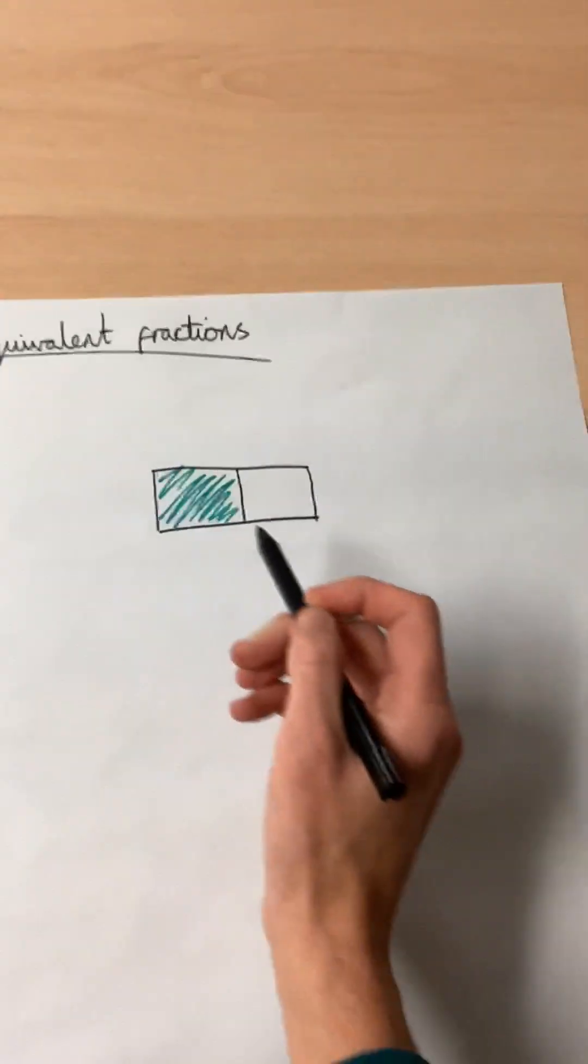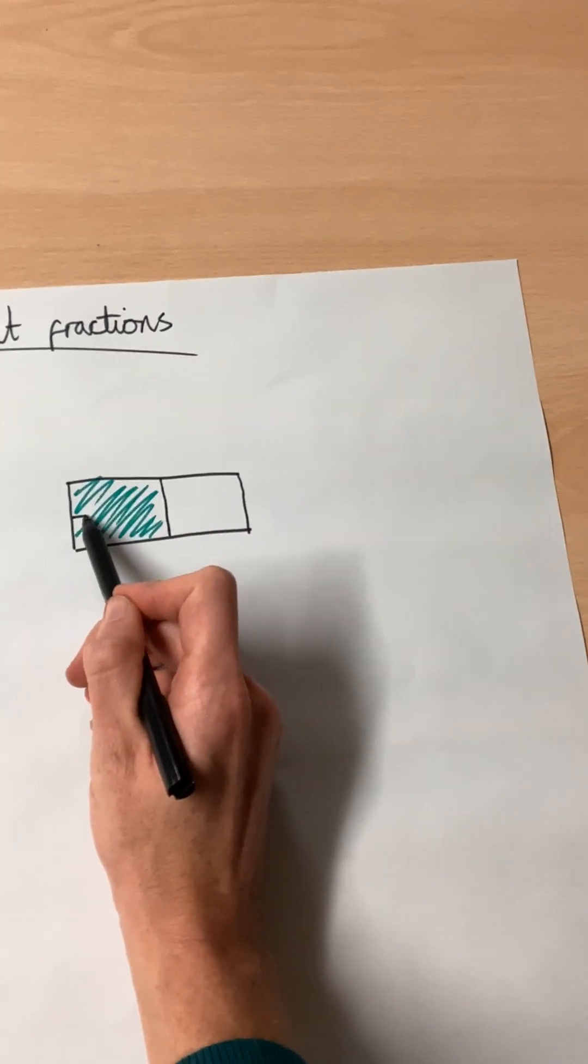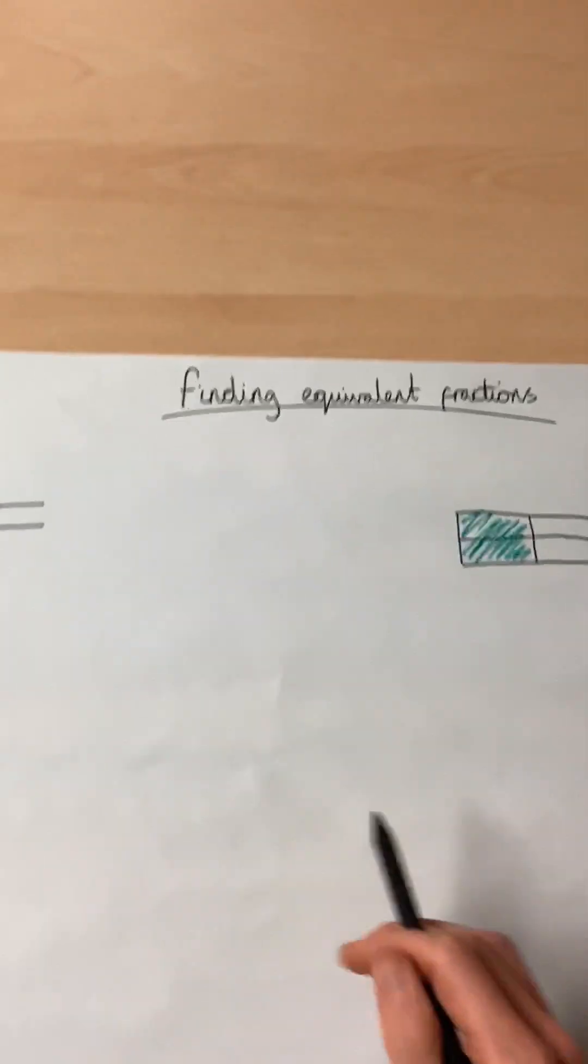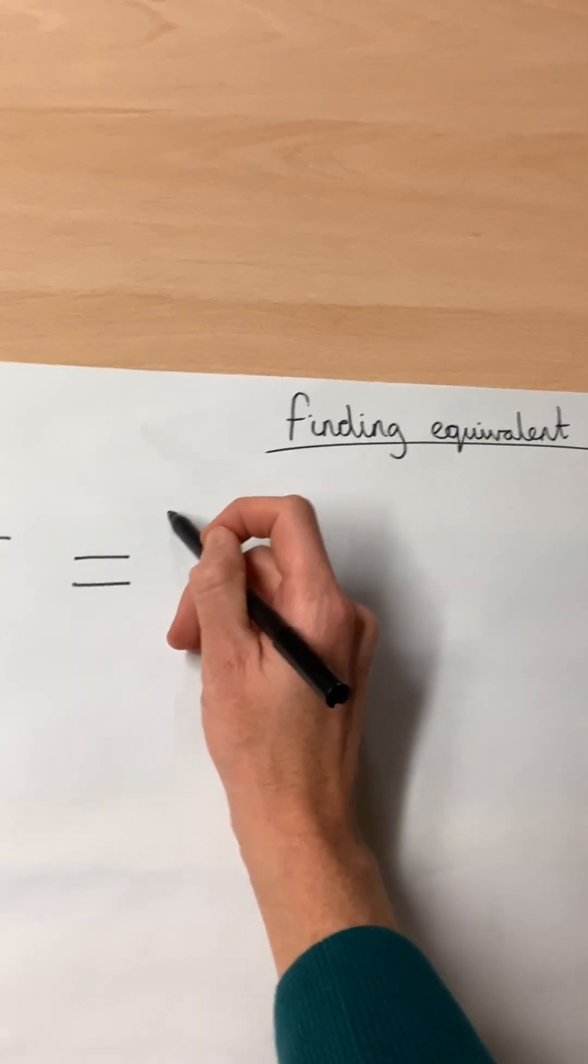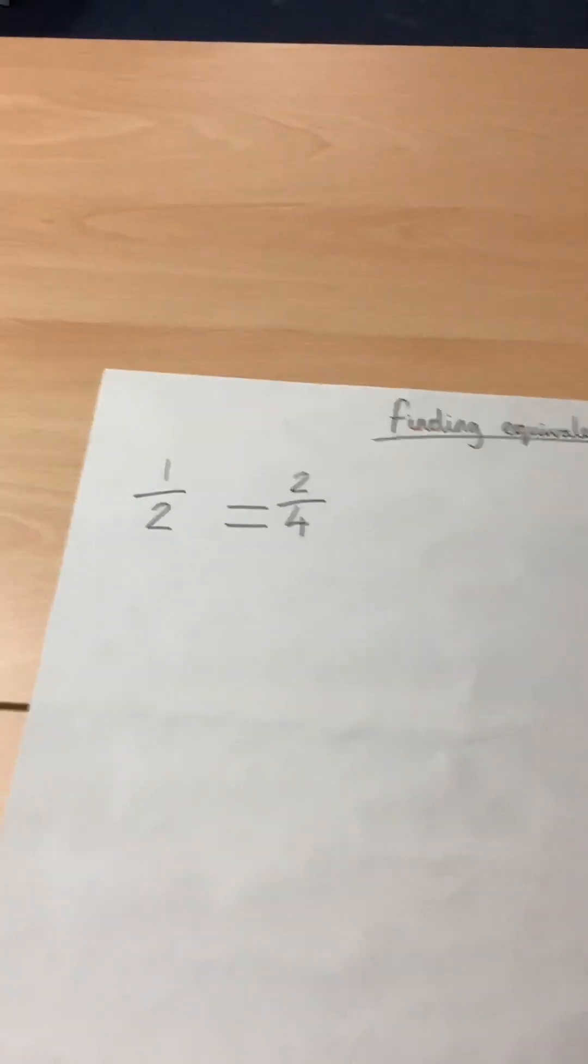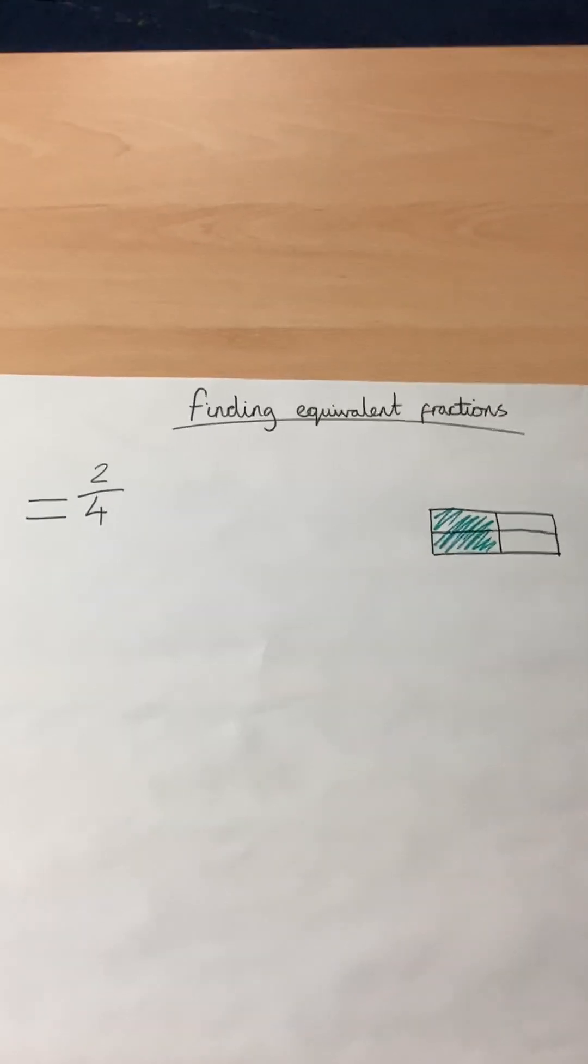Now, if I was to chop this diagram in half again, I would have two pieces coloured in out of four. I haven't changed the amount that is coloured in. So, one half is the same as two quarters.